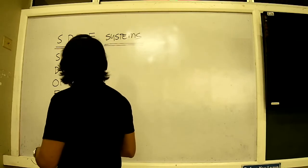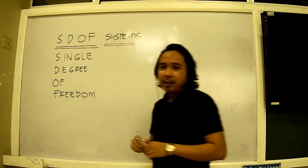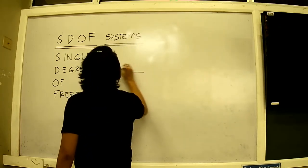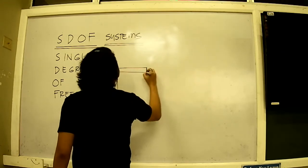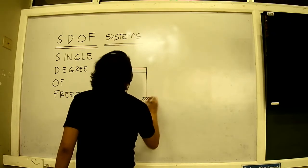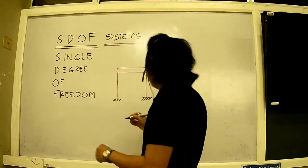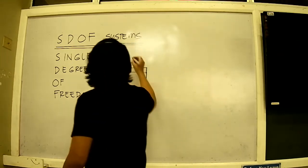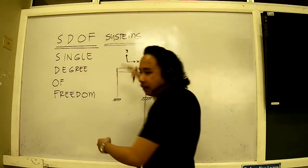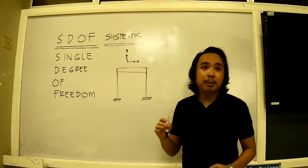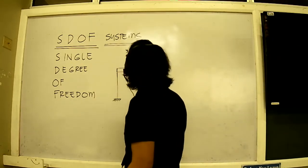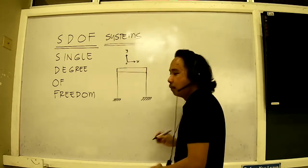When we talk about earthquakes, the most simple action of buildings when subjected to seismic activity is that it moves laterally. It can also move vertically, but most of the time, the simpler action is the lateral horizontal movement.